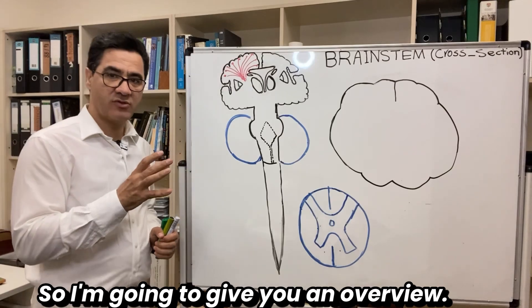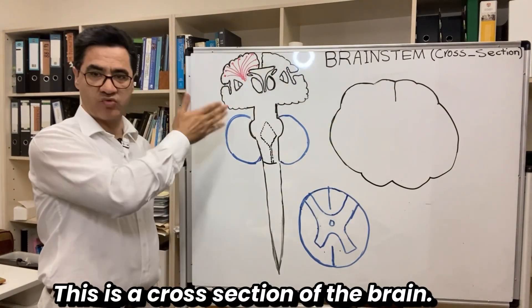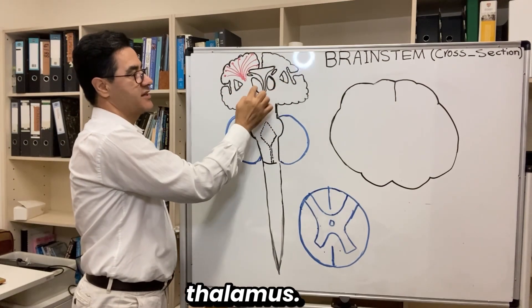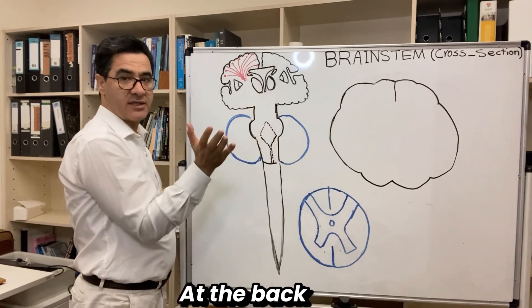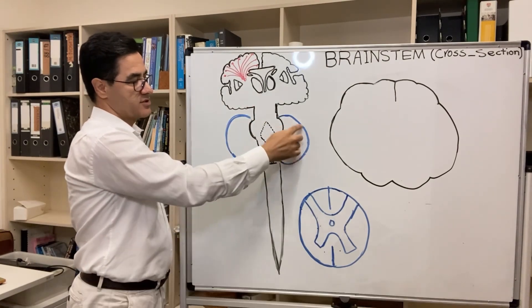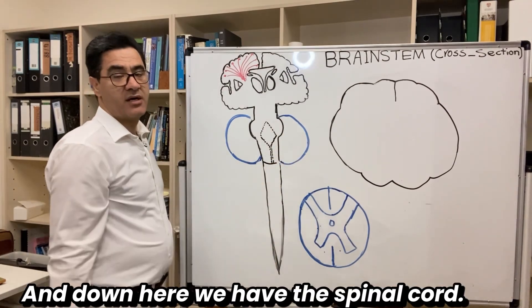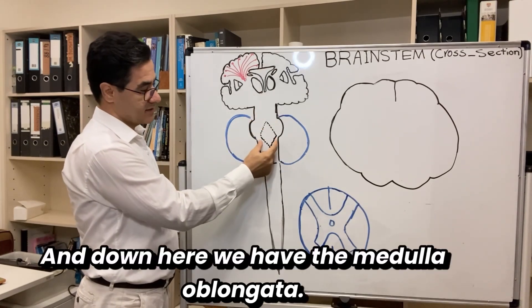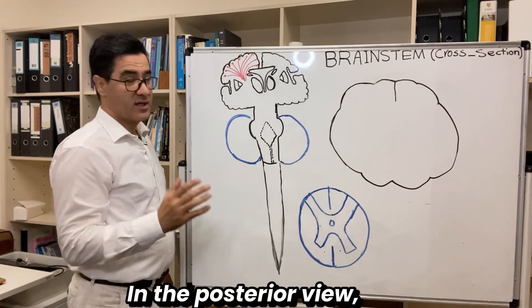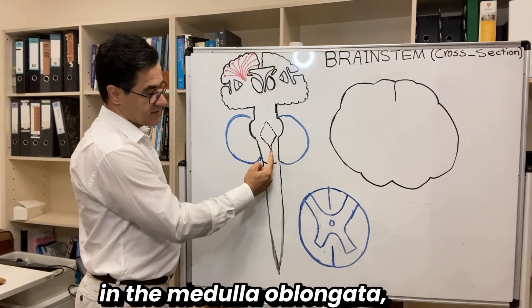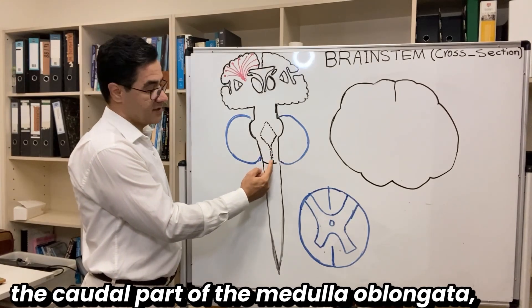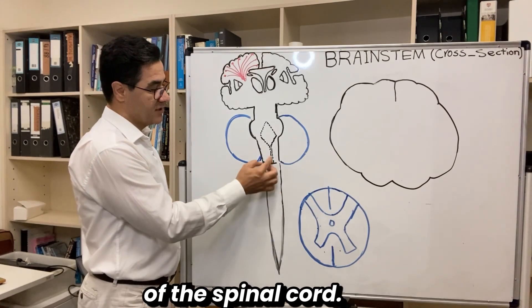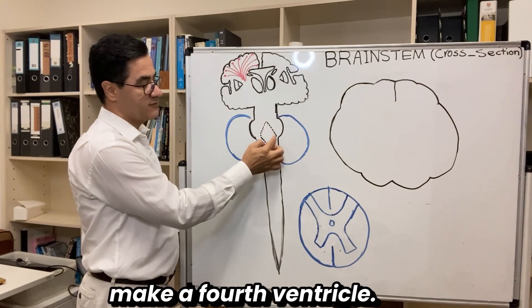I'm going to give you an overview. This is a cross-section of the brain — you can see the right and left hemisphere, some basal ganglia nuclei, and the thalamus. In the middle you can see the brain stem. At the back of the brain stem you can find this blue structure which is the cerebellum, and down here we have the spinal cord. The brain stem is comprised of the midbrain at the top, the pons as the bulge area, and the medulla oblongata down here. The central canal continues upward and expands to make a fourth ventricle.